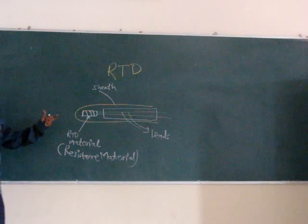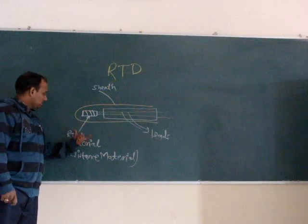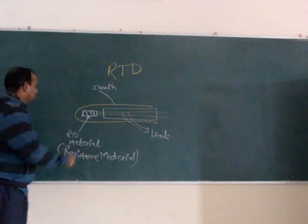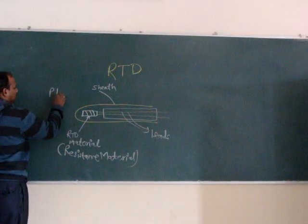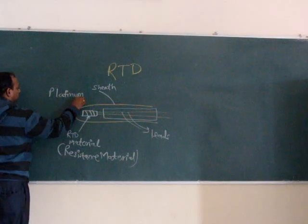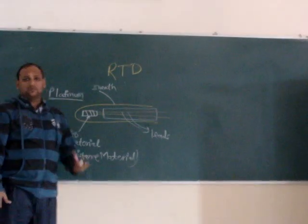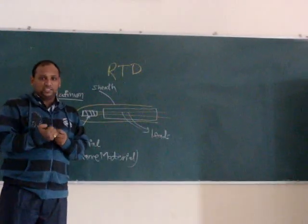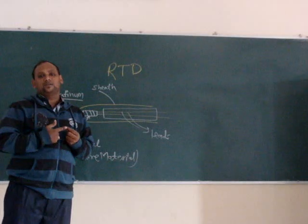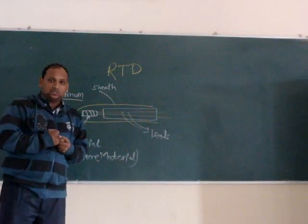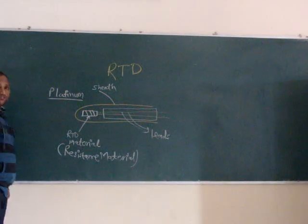So, how it works - this resistance material, it can be Platinum which is most probably used. Platinum, because at a low temperature change it provides an accurate resistance. So, due to accuracy this Platinum is used. So, how it functions.